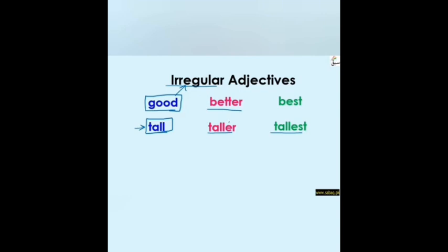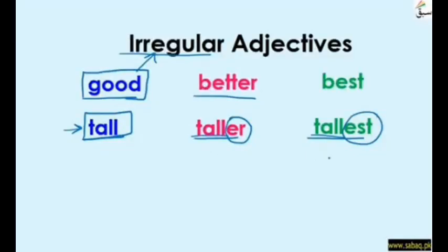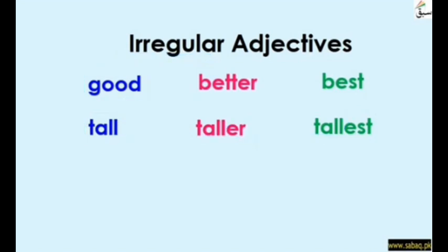So we have tall, taller, tallest. We add '-er' at the end for the comparative because it's a short adjective, and we add '-est' for the superlative. So 'good' is an irregular adjective and 'tall' is a regular adjective — it has a rule to rely on, while 'good' changes irregularly.